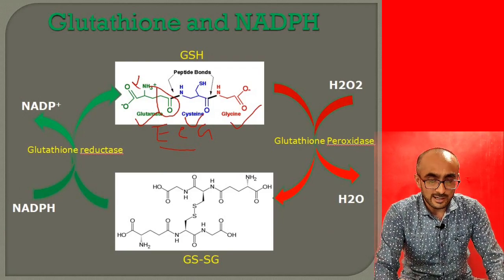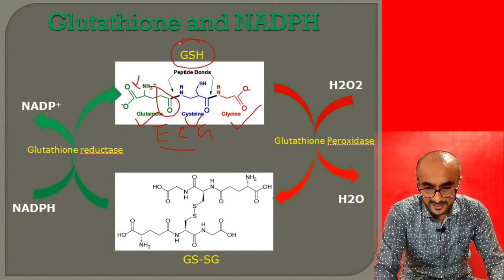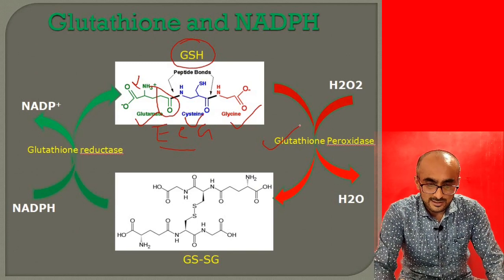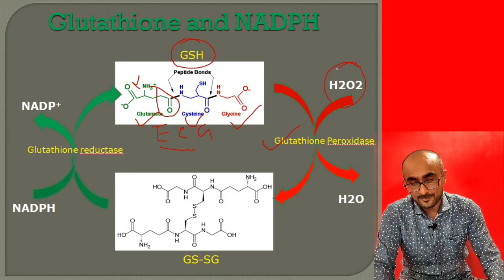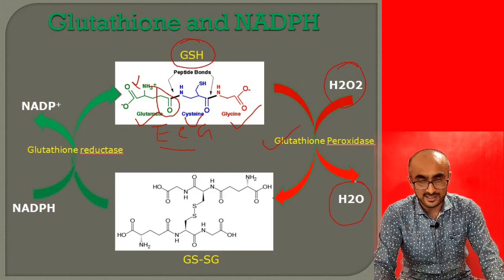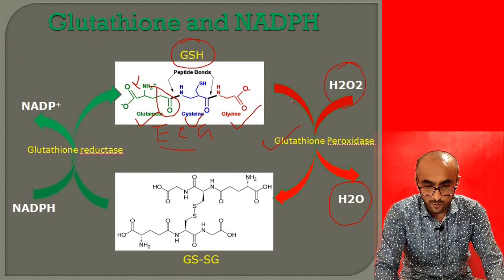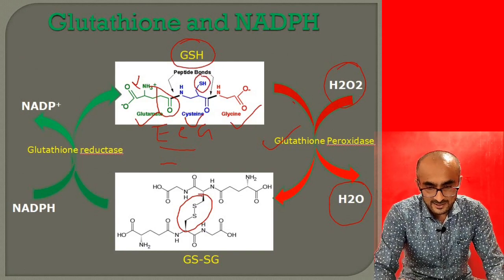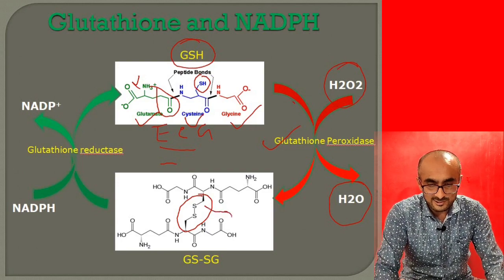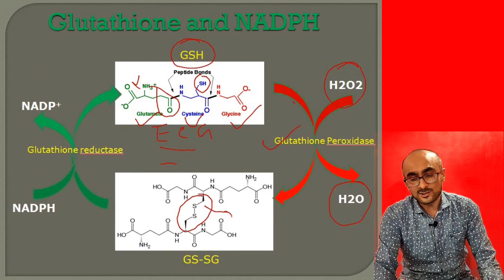This reduced glutathione is also called GSH. Reduced glutathione is oxidized by the enzyme glutathione peroxidase, which helps remove H2O2 from the cell. H2O2 is oxidizing and harmful to the cell, so it is converted into H2O by glutathione peroxidase. In turn, glutathione is oxidized to GSSG — the oxidized form — where two molecules of glutathione are linked together through a disulfide bond between the cysteine side chain SH groups. Reduced glutathione thus helps remove H2O2 from the cell.